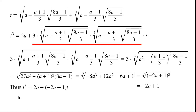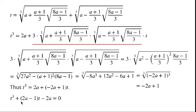Thus t cubed equals 2a plus (minus 2a plus 1) times t. By rearranging the equation, we can now write t cubed plus (2a minus 1) times t minus 2a equals 0.